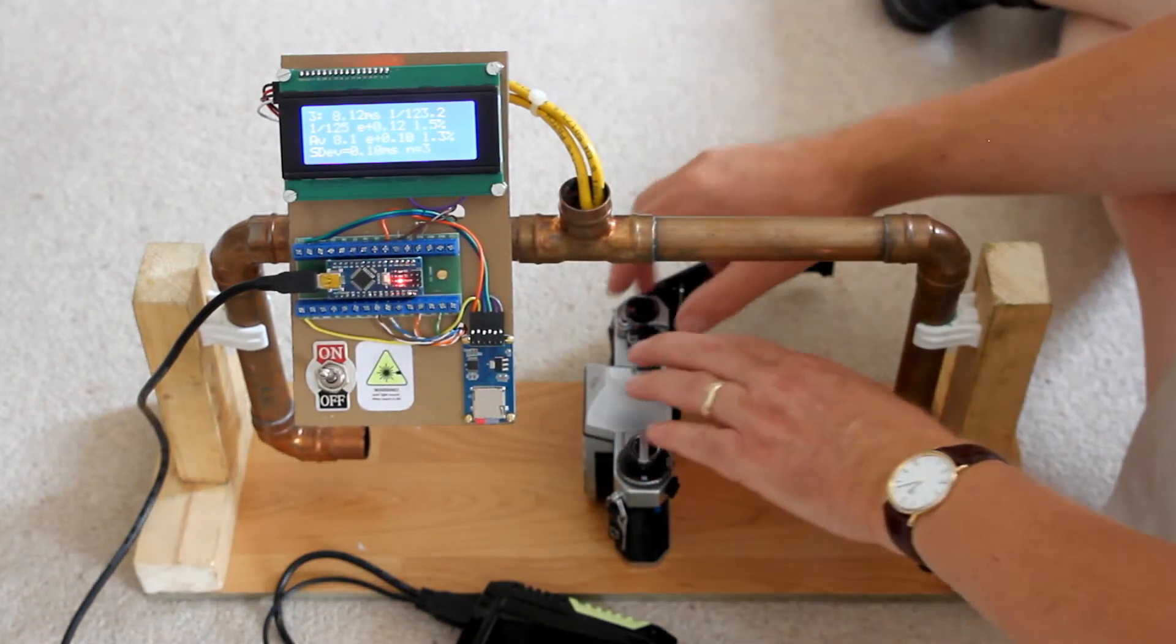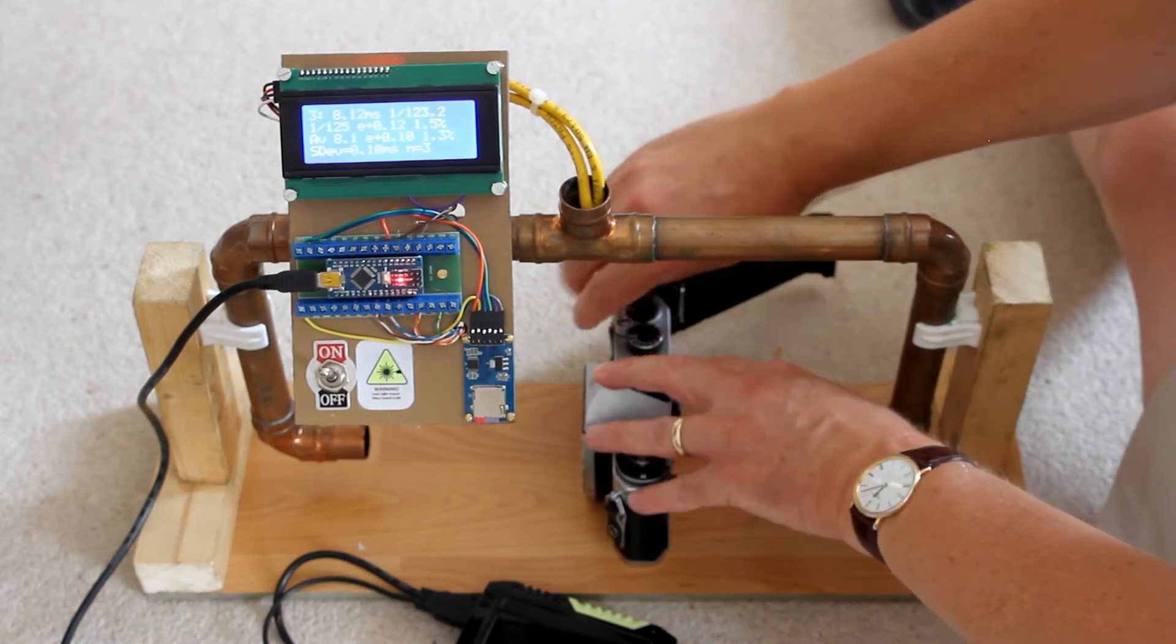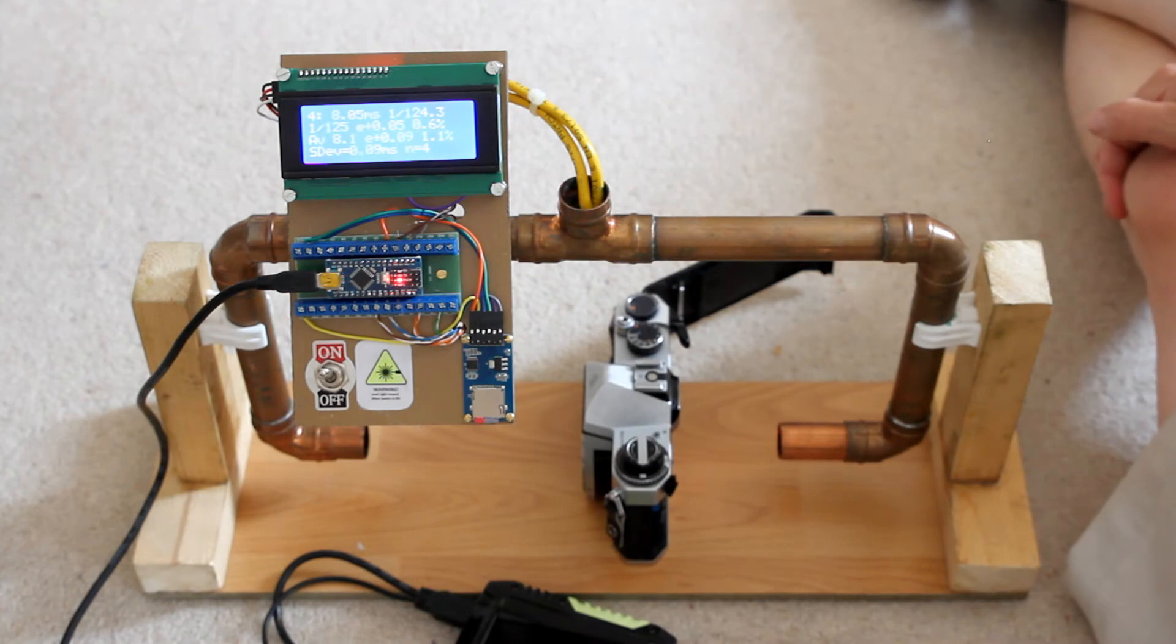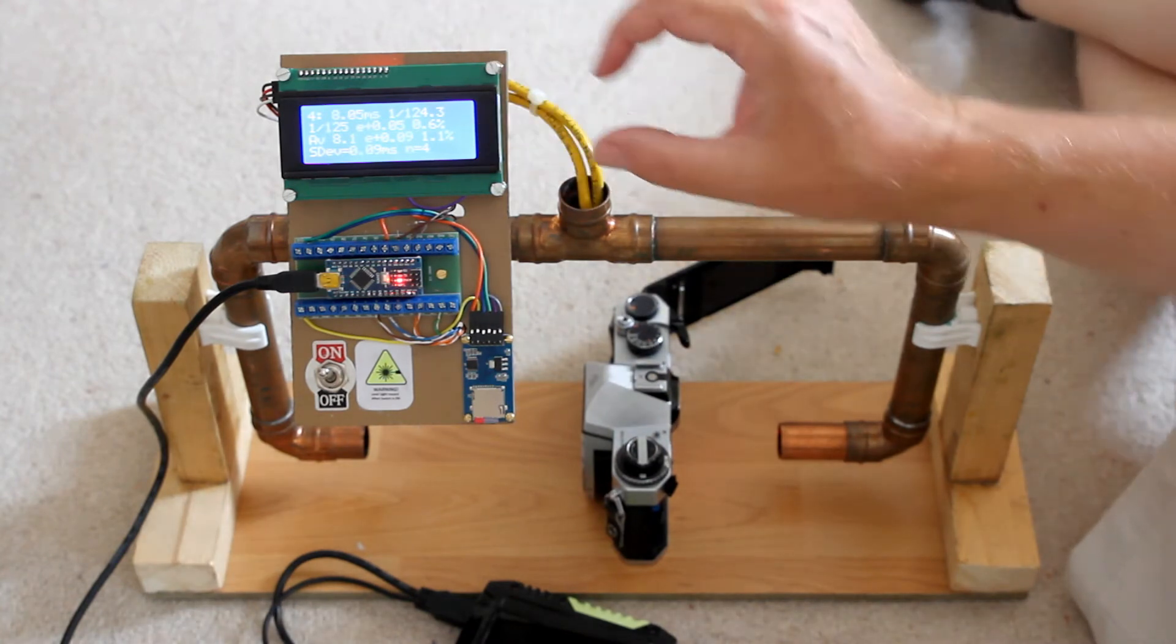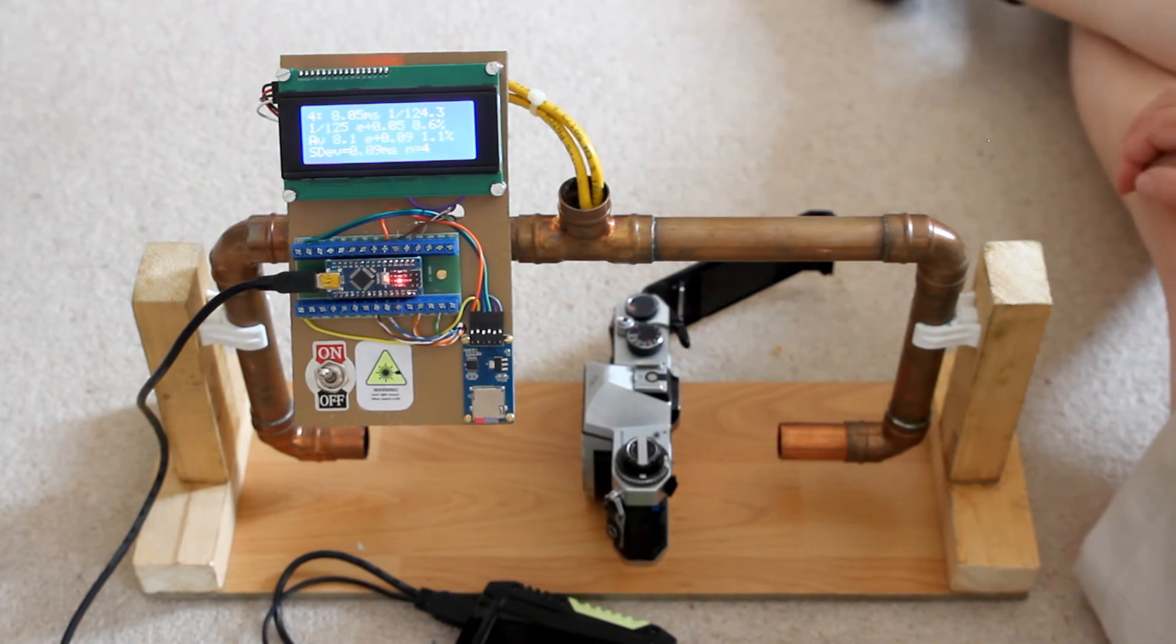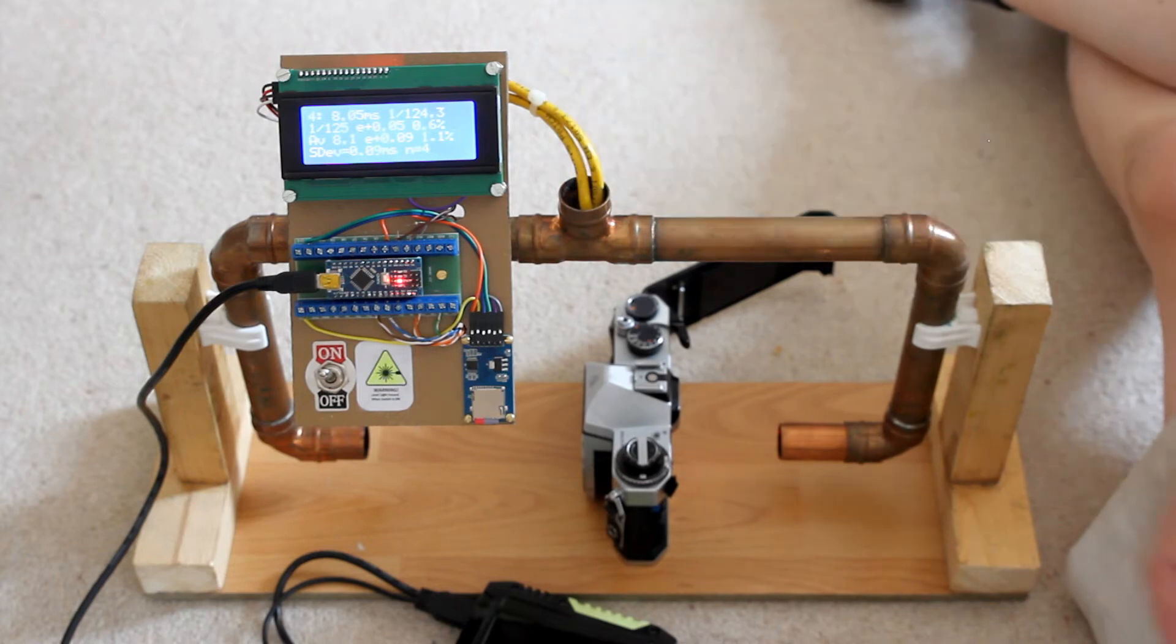And so I can just carry on with this and it'll keep updating the data. And all the time the information that you're seeing on the display is being recorded in a file with the test number on the little data logger. Now there are a few other things that happen with this.